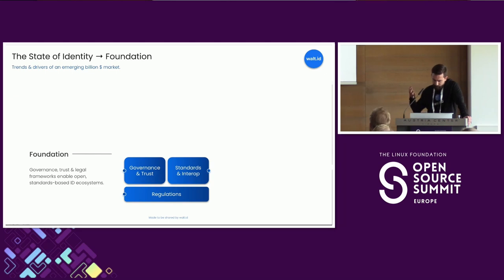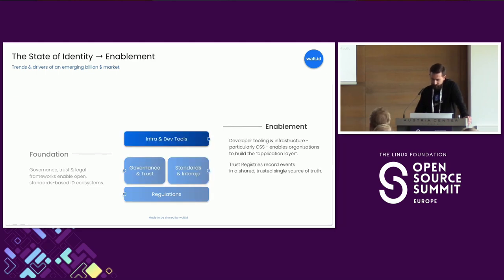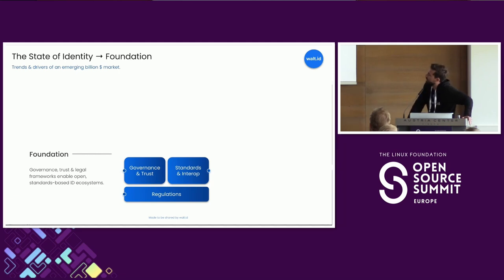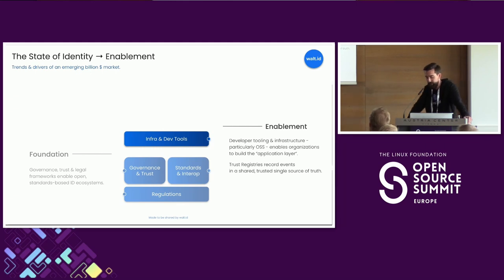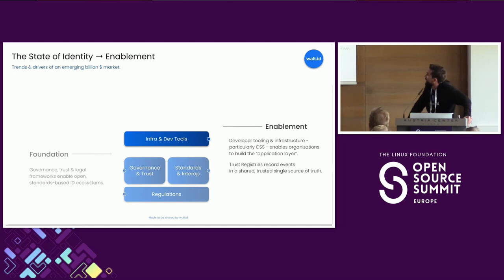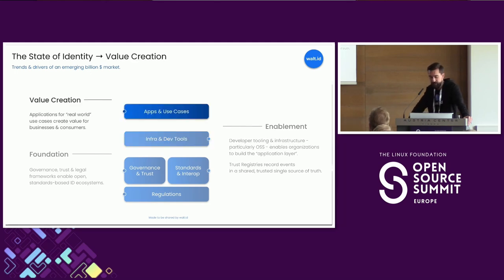If we put these different trends into three buckets, we have a foundational layer — mostly about regulations, government governance and trust establishment, as well as standards and interoperability. Without this, it will be very difficult, if not impossible, to actually start building applications. Then we have the level of infrastructure and dev tools, which includes not only the solutions you need to build issuers, wallets and verifiers, but also the trust registries — public key infrastructure using different technologies to actually make this work. And then on top of that, we have value creation as the last step: organizations building actual applications and use cases to create value for businesses and individuals.